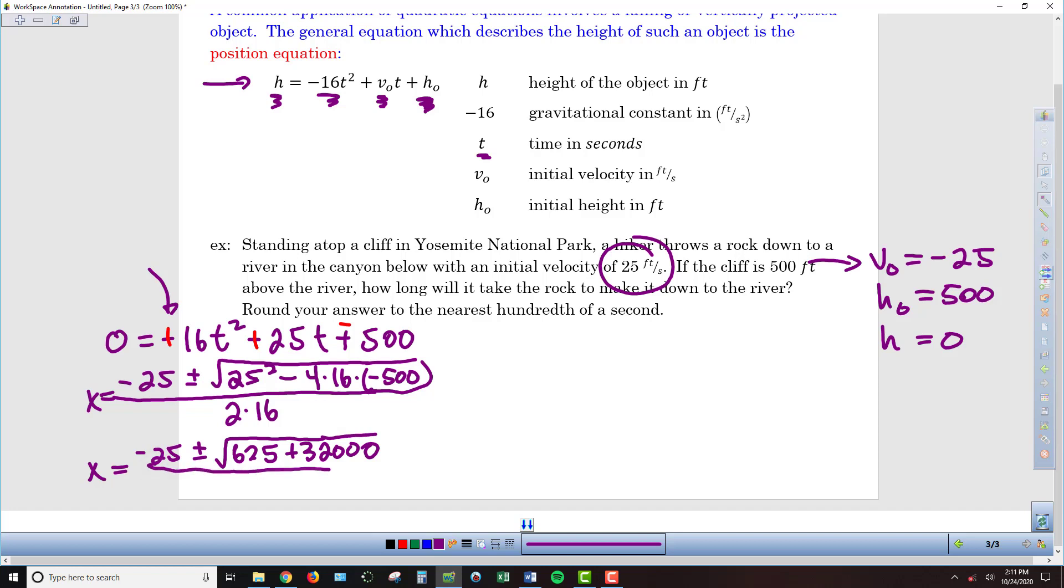And then, in the denominator, we've got 2 times 16, which is 32. So, if we keep on going, move over this way a little bit, we've got x equals, so we still have that negative 25, plus or minus. And so, now that's the square root of, if we add those two together, 32,625, all over 32.